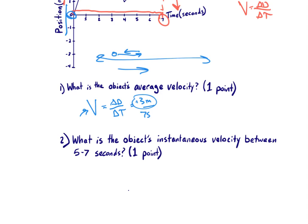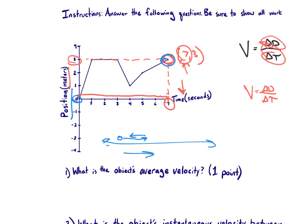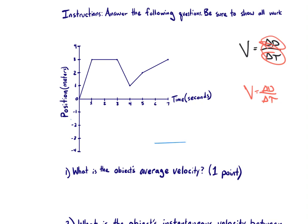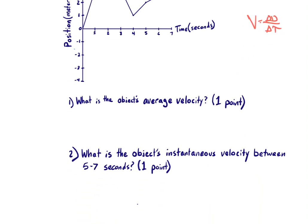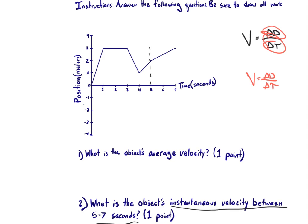Number two introduces the idea of instantaneous velocity. Instantaneous velocity is an object's velocity at a certain snapshot of either time or position, depending on how it's asked. This problem asks for the instantaneous velocity between five and seven seconds, meaning we're looking at the object's velocity only within that small segment of time. Looking at our graph, the instantaneous velocity is going to be the change in displacement over the change in time within that small segment.